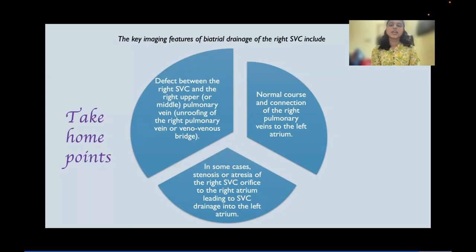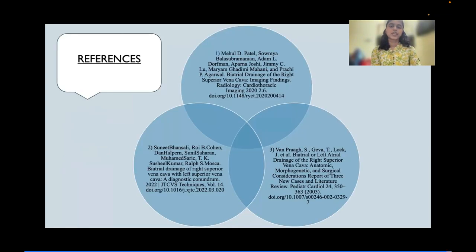Summarizing the key imaging features: the defect between the right SVC and right upper or middle lobe pulmonary vein is due to unroofing of the right pulmonary vein, indicating a veno-venous bridge. The normal course and connection of the right pulmonary vein to the left atrium is maintained. If stenosis or atresia of the right SVC orifice to the right atrium is present, there will be predominant drainage into the left atrium. Thank you.